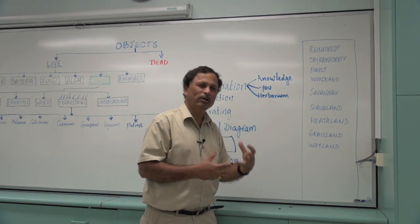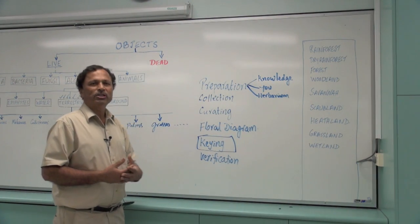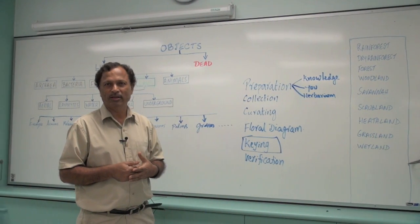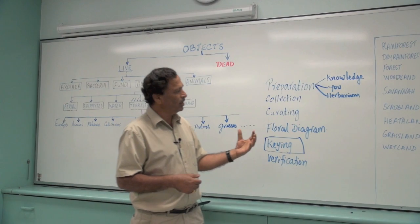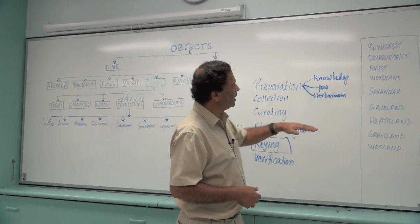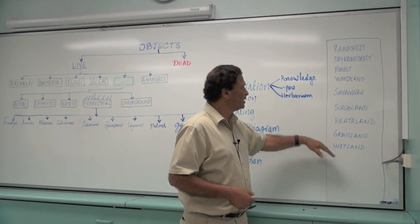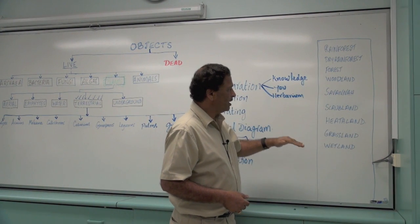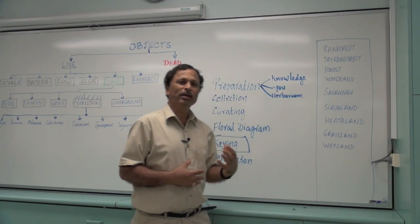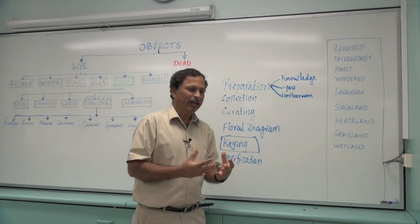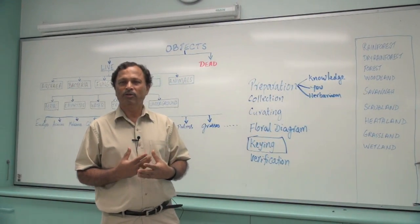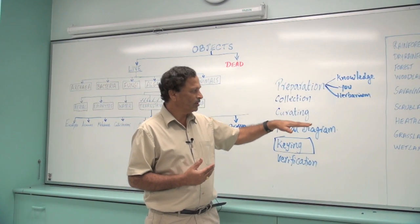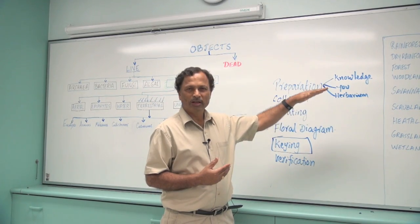So it's good to know in which community these plants grow. That will also help you in identifying that specimen. The reason being, certain plants grow only in wetlands, certain plants grow only in savannas, certain plants grow in grasslands. So by knowing the place where you collect it from, it will help you identify them because certain plants grow only in those habitats.